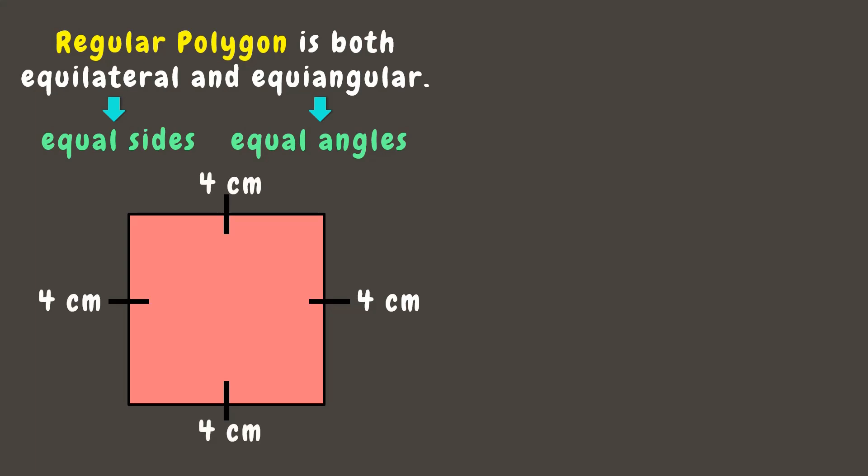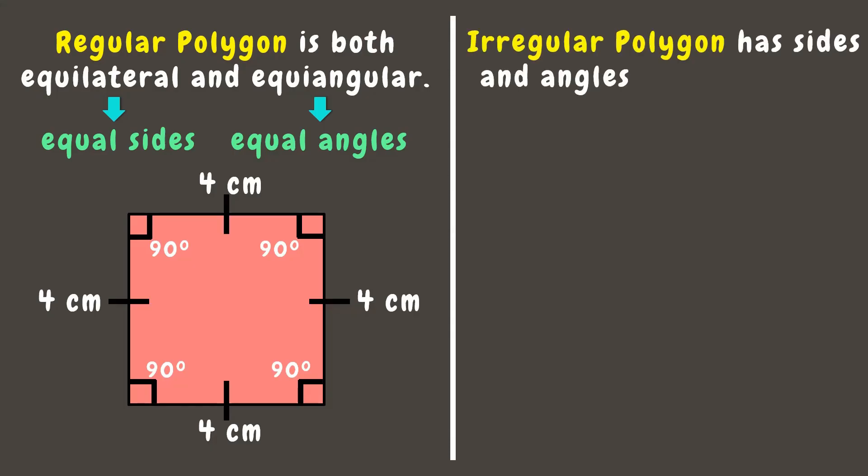This means the square is equilateral. Also, we know that the square has four right angles, which means it is also equiangular. Since the square is both equilateral and equiangular, it is a regular polygon. Now, unlike a regular polygon, an irregular polygon has sides and angles with different measures.